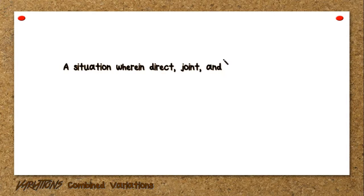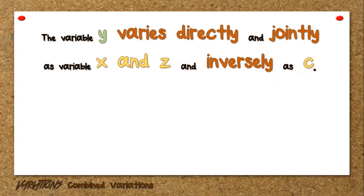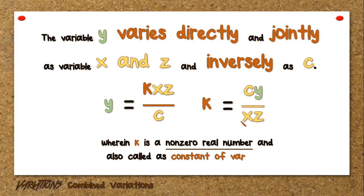Next, combined variations. A situation where direct, joint, and inverse variations are all involved is called combined variation. Combined variation states that the variable Y varies directly, jointly, or inversely proportional with more than one variable. For example, the variable Y varies directly and jointly as variables X and Z and inversely as C. This can be translated mathematically as Y equals K times X times Z over C, or equivalently K equals C times Y over X times Z, wherein K is a non-zero real number also called the constant of variation.